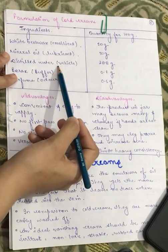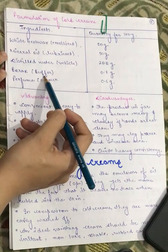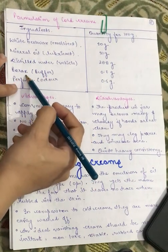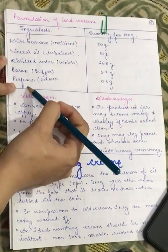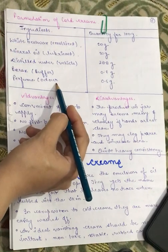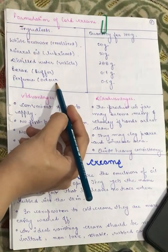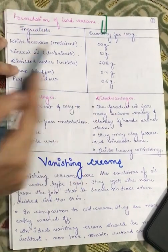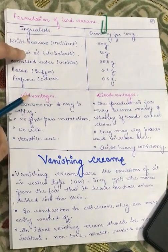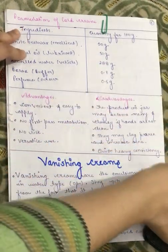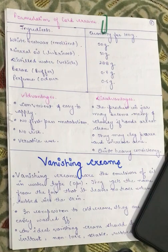The formulation of cold creams includes distilled water acting as a vehicle at 28.8 grams, borax acting as a buffer to resist change in pH at 0.7 grams, and perfume to achieve fragrance and enhance customer acceptance at 0.5 grams.